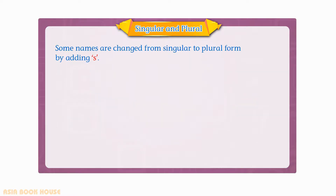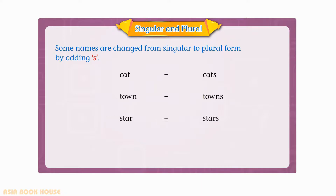Some names are changed from singular to plural form by adding s. Cat, cats. Town, towns. Star, stars. Boy, boys.